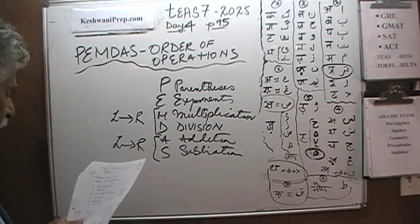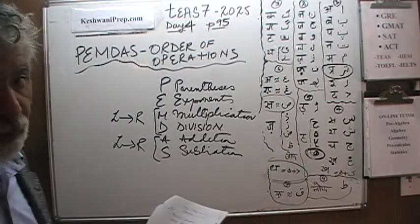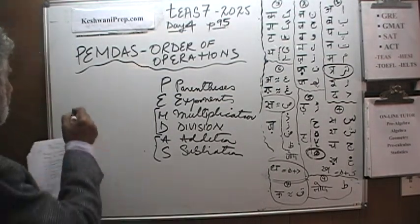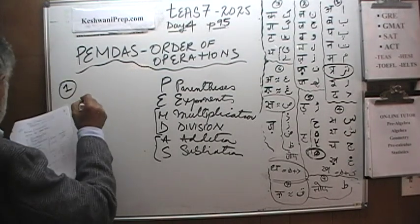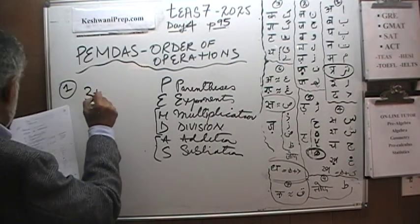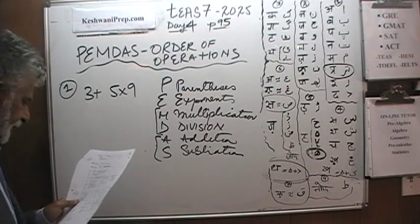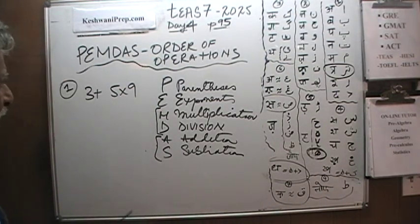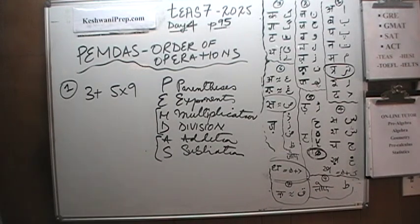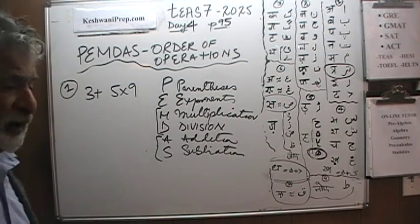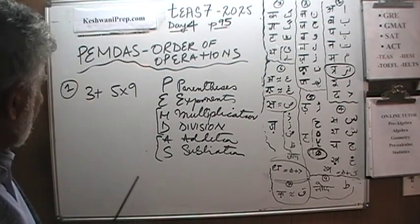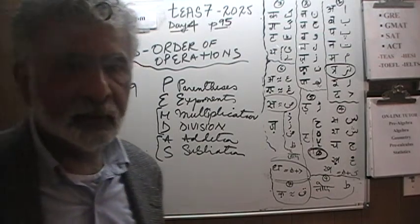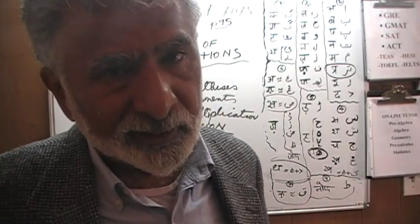I left absolutely no room for myself. And that is called a bloody genius. That's what I am. Number 1. 3 plus 5 times 9. Now let me explain to you why we have this order of operations.